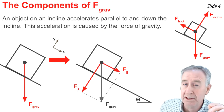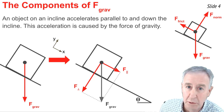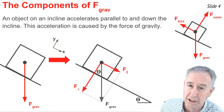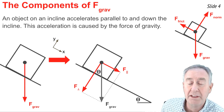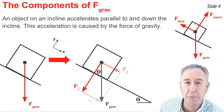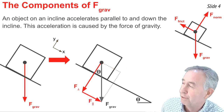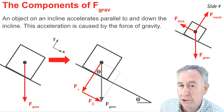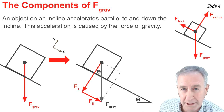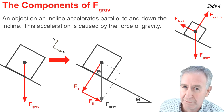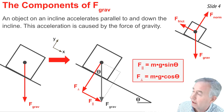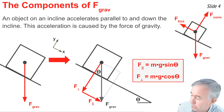The angle theta is the angle between the horizontal and the inclined plane — it's also the angle between the perpendicular to the horizontal and the perpendicular to the inclined plane. The perpendicular component is the side adjacent to theta on the triangle formed by the perpendicular component, the parallel component, and the force of gravity. The parallel component is opposite to the angle theta. Because of this, F-parallel equals F-grav (or mg) times sine of theta, and F-perpendicular equals mg times cosine of theta.